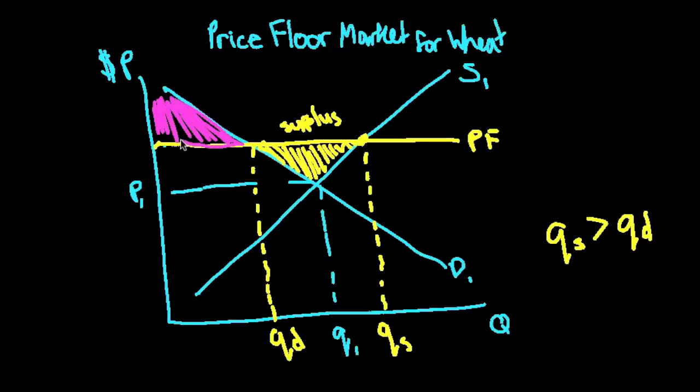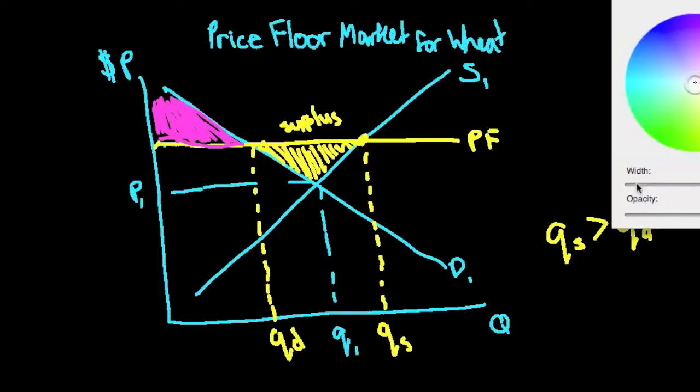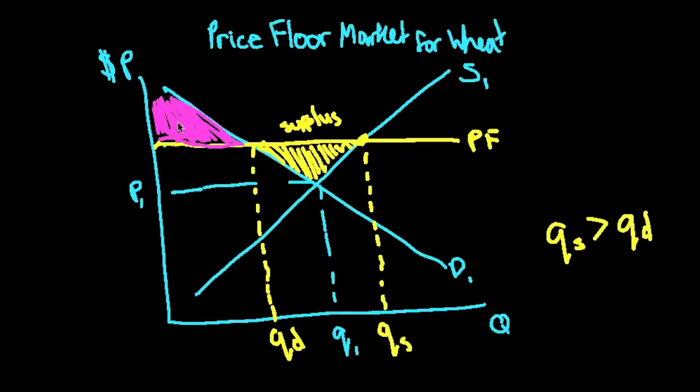Because we have to remember, with the initial price at market equilibrium, this whole triangle right here was our consumer surplus. But now it's being reduced to just that small little triangle. So this is consumer surplus, I'm just going to put CS for that.